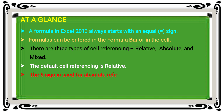The dollar sign is used for absolute referencing. The dollar sign fixes both the row and column, giving the exact cell reference. The row and column are defined by the dollar sign — this is called the absolute reference.